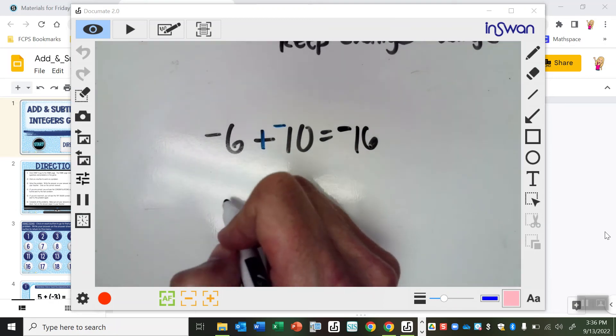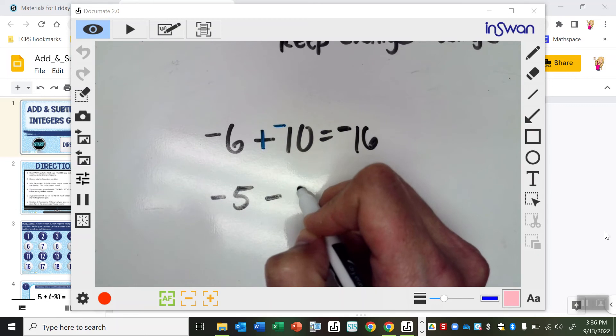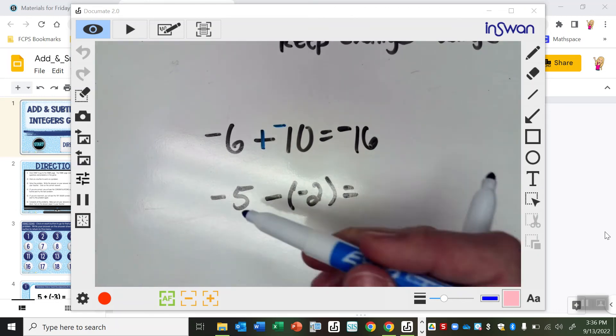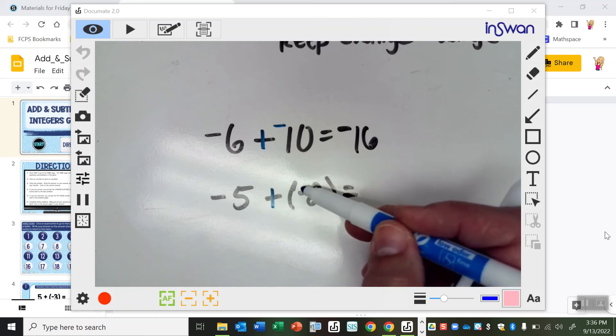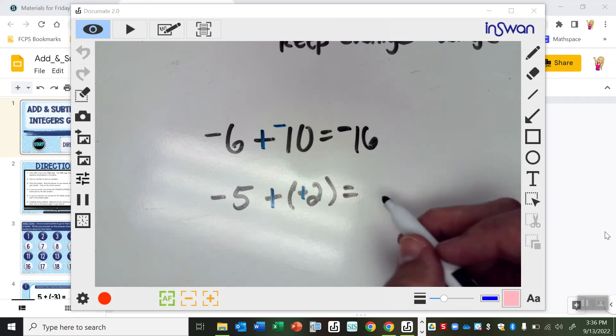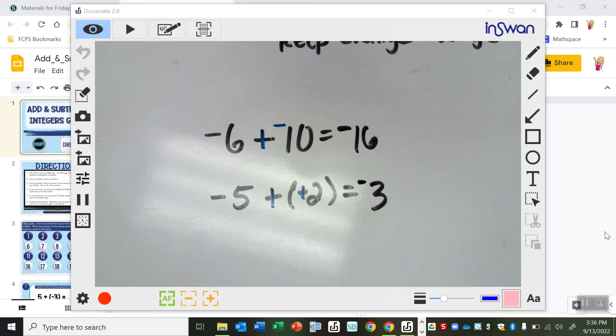All right, so how about negative 5 minus negative 2. All right, so again, subtraction, a lot going on there. Keep, so don't change this. Change, change. Oh, so you mean this is negative 5 plus 2. The signs are different, so they act against each other. So 5 minus 2 is 3. And which one's bigger? 5 is bigger than 2. So I'm going to keep the negative from him, because he wins the battle. All right, because they're going to act against each other.